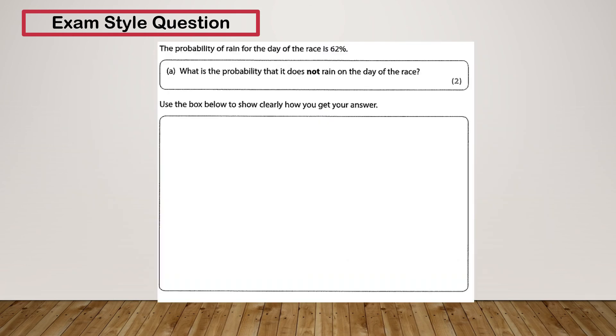Let's have a look at one last example. The probability of rain on the day of the race is 62%. What's the probability it does not rain? Now if there's a 62% chance, then we need to take 62 away from 100, which is 38. So there's a 38% chance it does not rain on the day of the race.